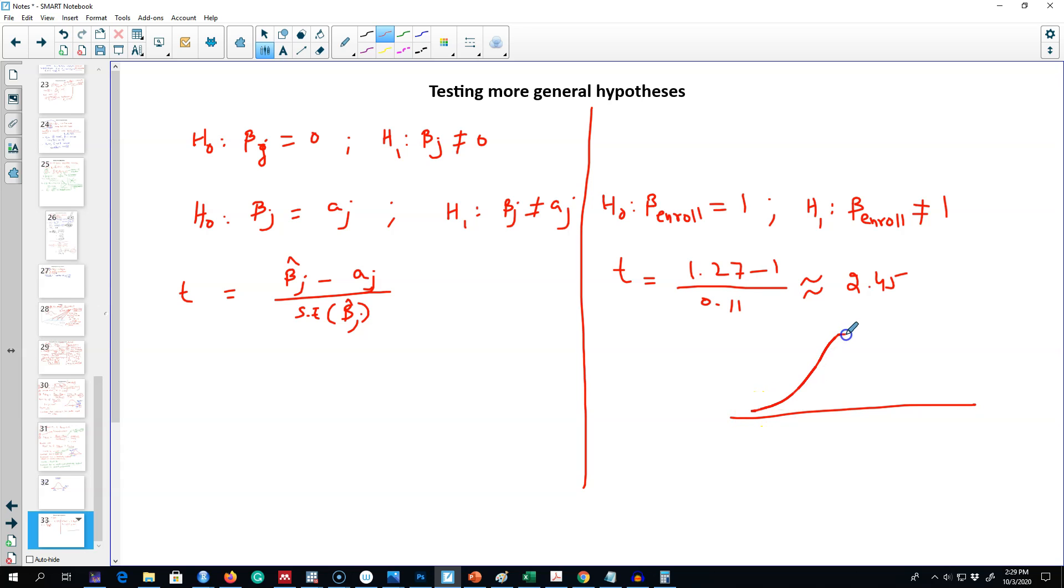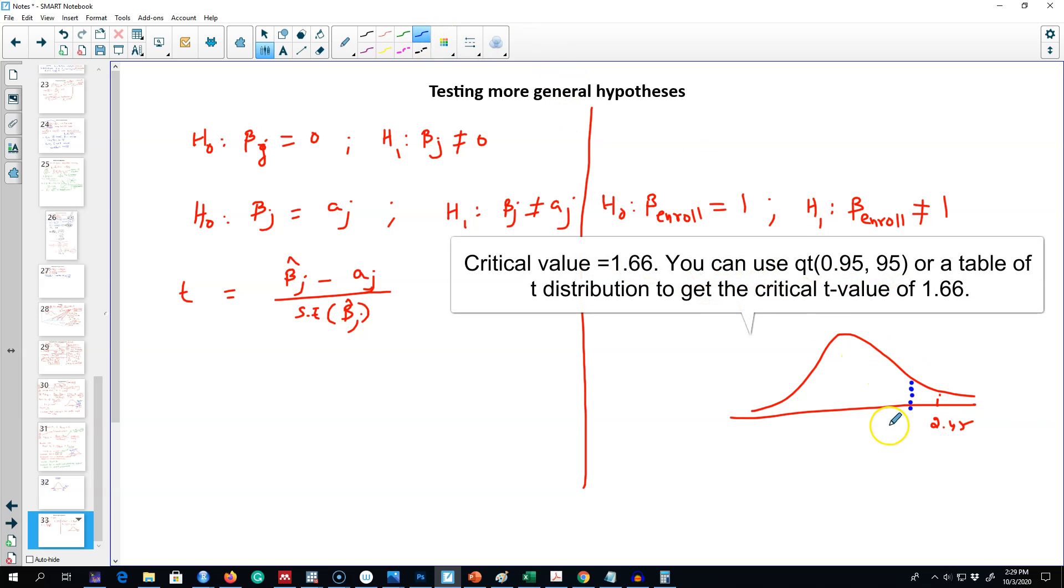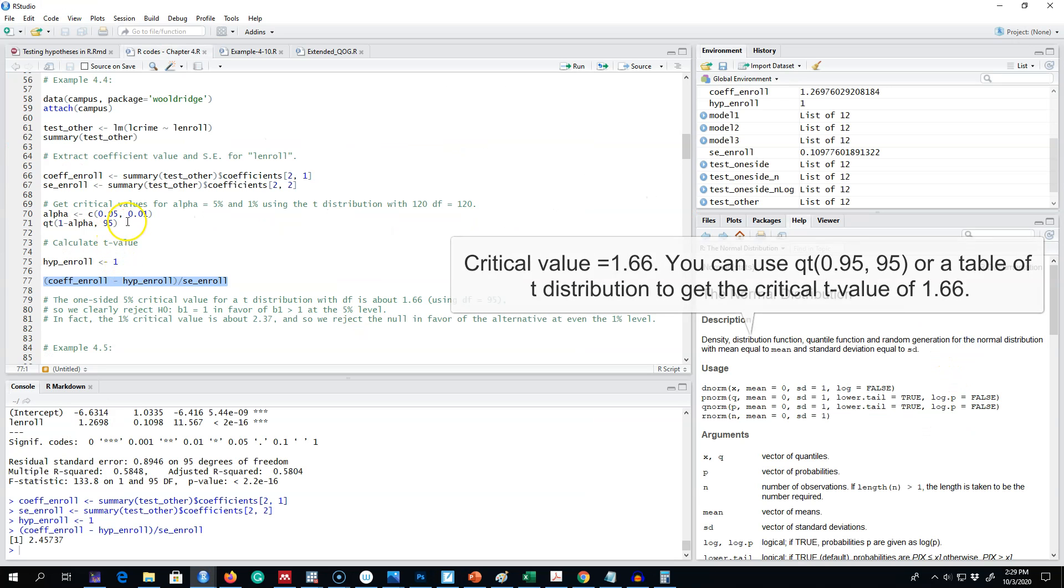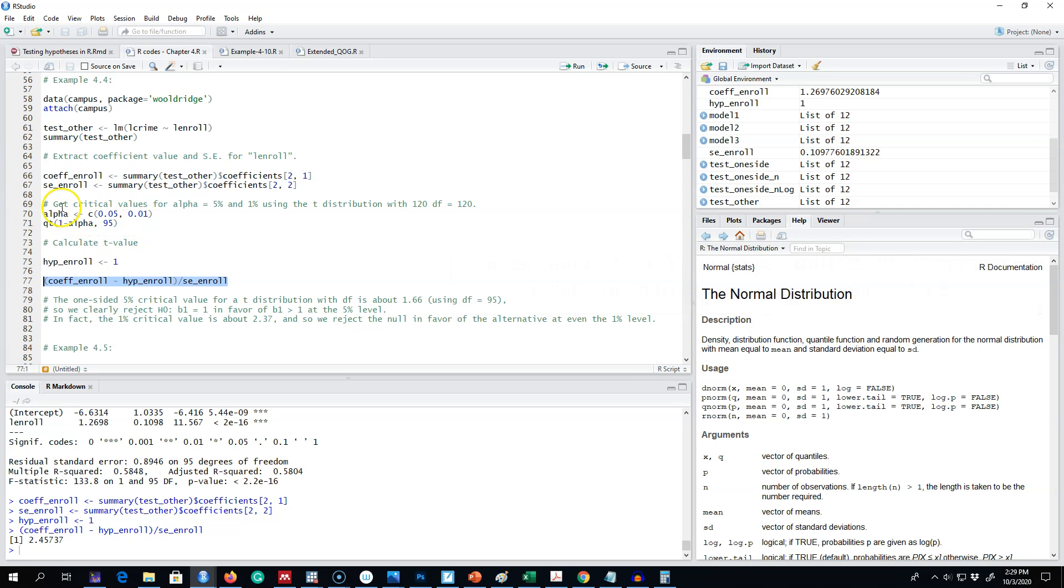If we plot this value on a normal curve, we see that this value is somewhere here, and our rejection rule at 5% is 1.96. So we're gonna reject our null hypothesis. You can actually calculate the critical t values using this function.